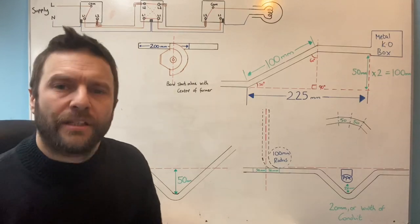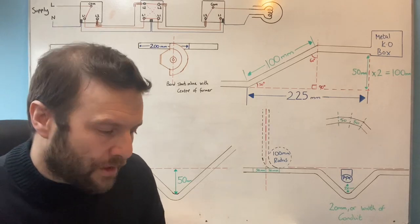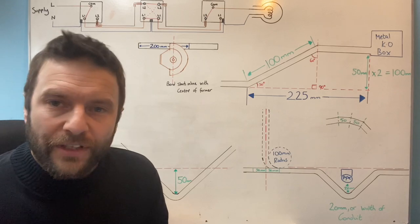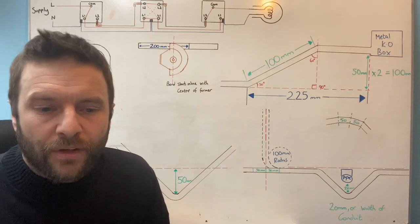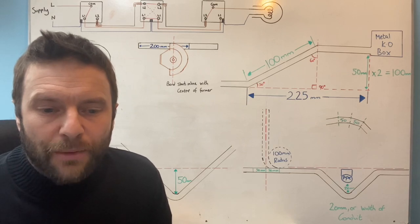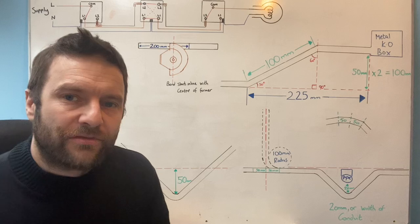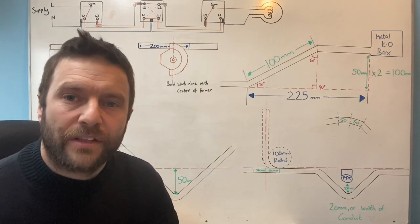We're on section A, composite installation from a three phase and neutral board. The time allowed for this is eight and a half hours for the AM2 or 10 hours for the AM2S. You'll be allowed a minimum of 15 minutes to read this section and prepare for assessment. You need to read through this candidate specification that they give you because it tells you everything that you need to know.